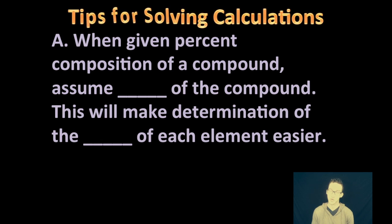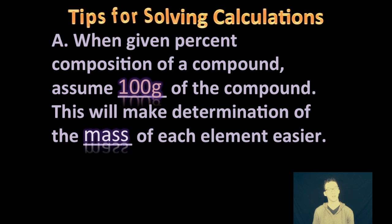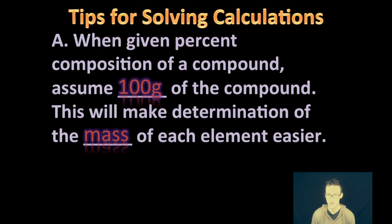Alright, so last we're going to talk some quick tips for solving calculations involving empirical formulas and molecular formulas. Some of these things will make a lot more sense when we start working through some problems. But first, keep in mind that when you're given percent composition of a compound and you're asked to determine empirical molecular formula, always assume 100 grams of the compound. It makes determination of the mass value of each element easier. And the reason why it makes this easier is it makes converting from percentages to grams a heck of a lot easier. For example, 50% of 100 grams is 50 grams. Or 25% of 100 grams is 25 grams. Or, let's get tricky, 22.16% of 100 grams is still 22.16 grams. So, assume 100 grams, it makes your life easier.